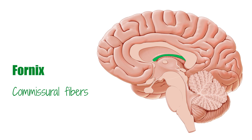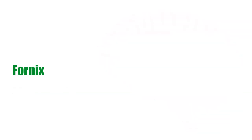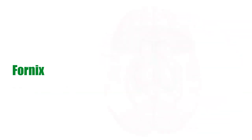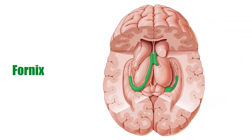Although the fornix is one of the commissural fibers of the brain, its function is not limited to connecting two identical parts of the cerebral hemispheres. Along with connecting identical areas across the two cerebral hemispheres, the fornix also serves to connect different structures that have common functions. Now before we go into the function of the fornix, let's first look at the structure of the fornix.